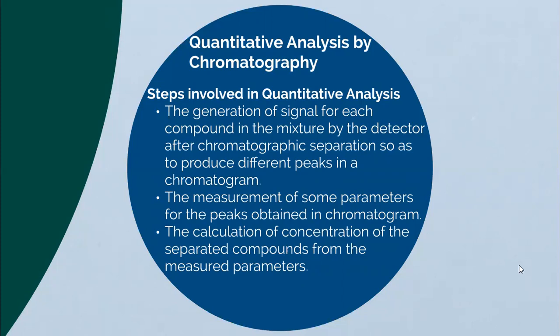Quantitative analysis generally involves three major steps: first, the generation of a signal for each compound in the mixture by the detector after chromatographic separation, so as to produce different peaks in the chromatogram; second, the measurement of some parameters for the peaks obtained in the chromatogram; and third, the calculation of the concentration of the separated compounds from those measured parameters.